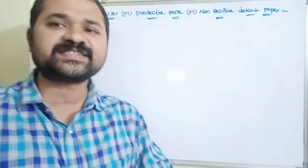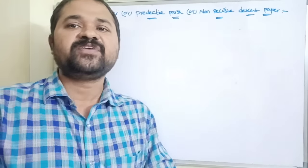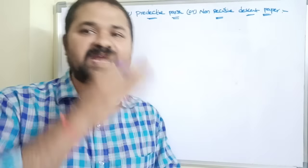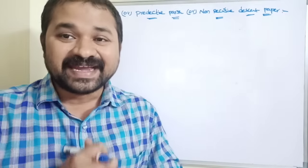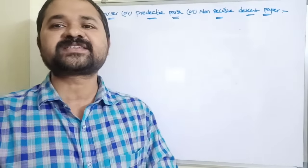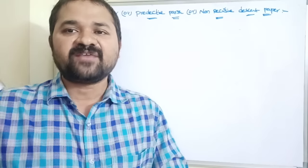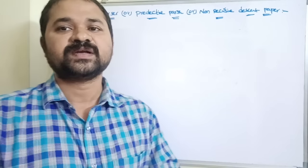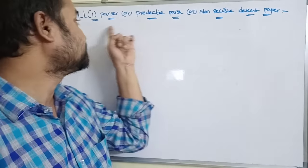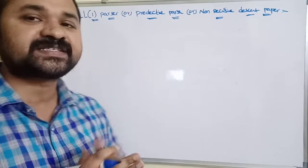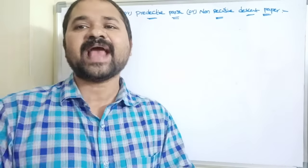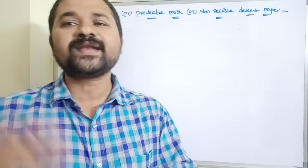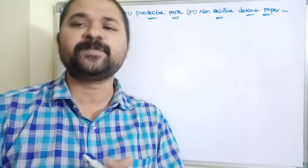The first L specifies we are scanning the input from left to right. The second L specifies left most derivation is used. And the one specifies at a time we have to read only one input symbol from the input.